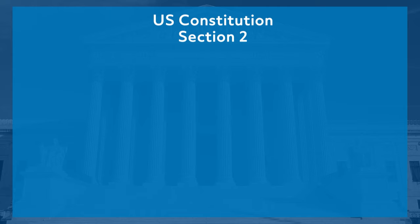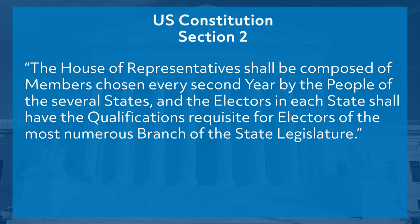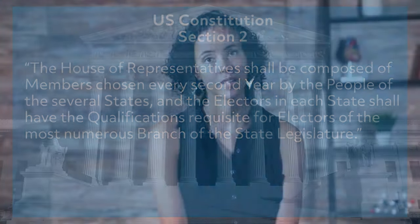Section 2 of the Constitution concerns the House of Representatives: 'The House of Representatives shall be composed of members chosen every second year by the people of the several states, and the electors in each state shall have the qualifications requisite for electors of the most numerous branch of the state legislature.' If you are curious about what electors are and how they work, check out our video on the Electoral College. There are several other rules regarding qualifications of representatives, such as age and citizenship, but we won't discuss all of those here.